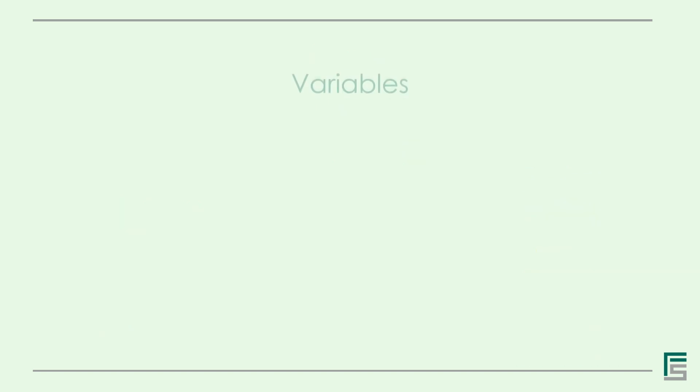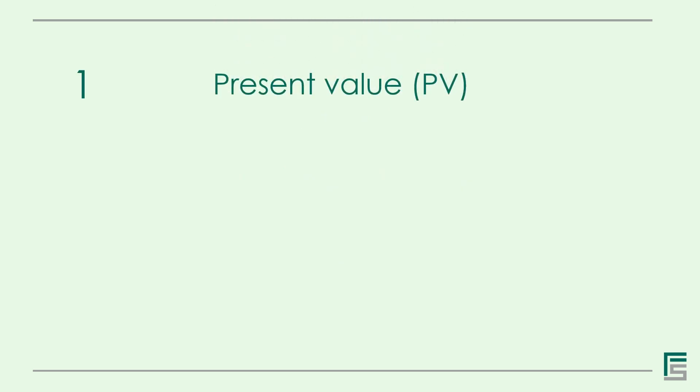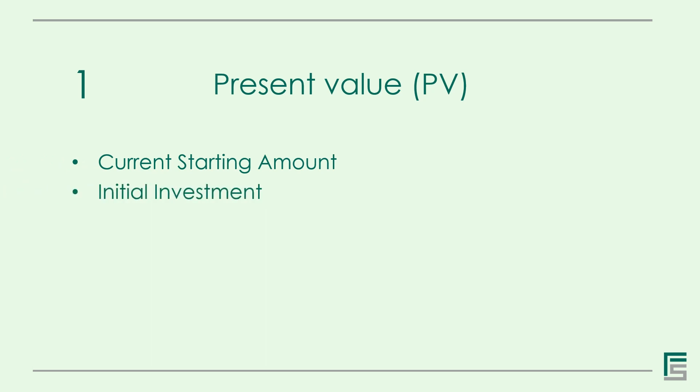There are some variables that are needed to calculate the time value of money — 5 to be more precise. The first is Present Value, which is the current starting amount. It is the money that one may have in their hands in the moment — the initial investment.